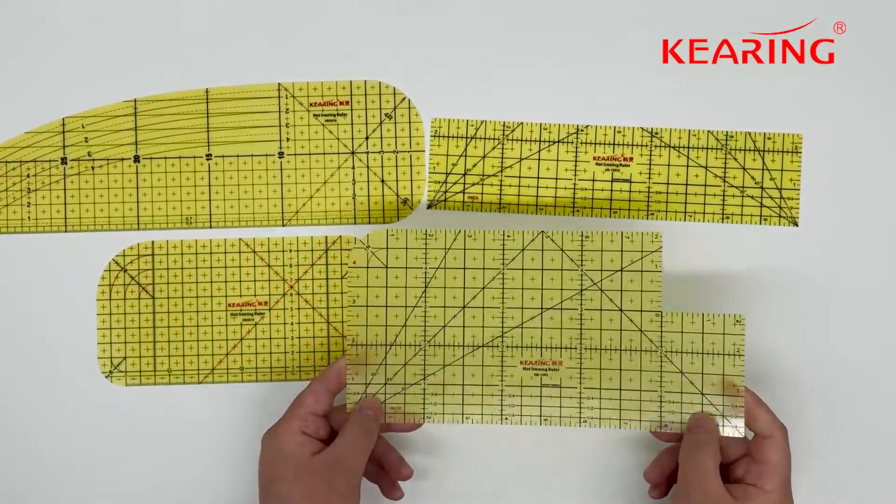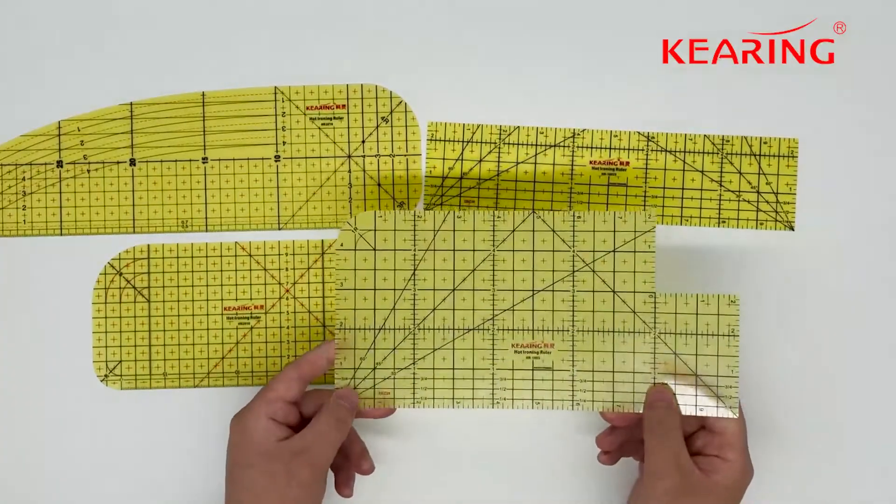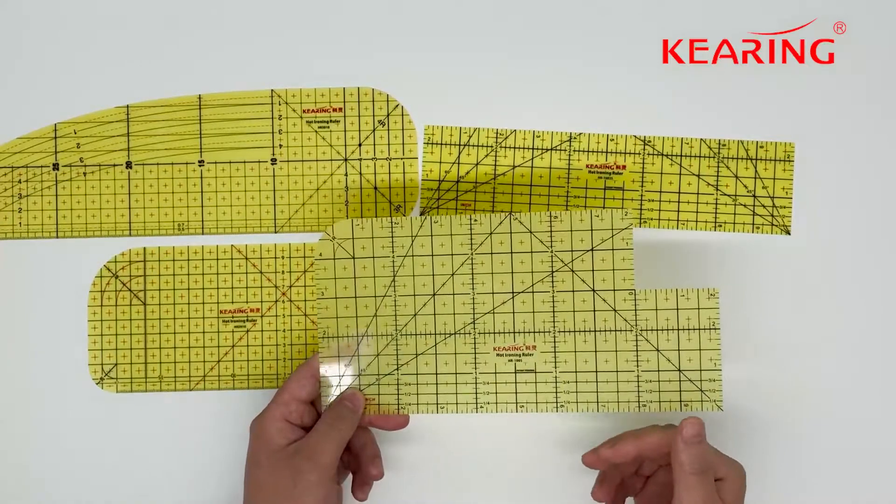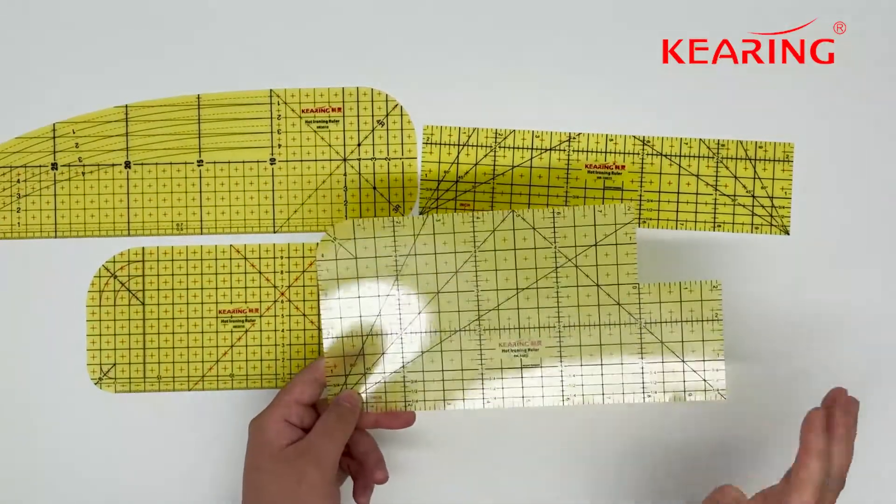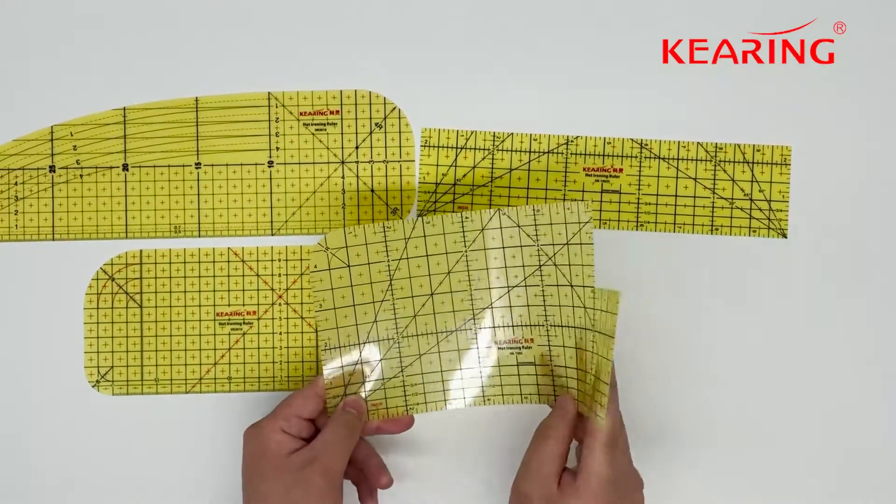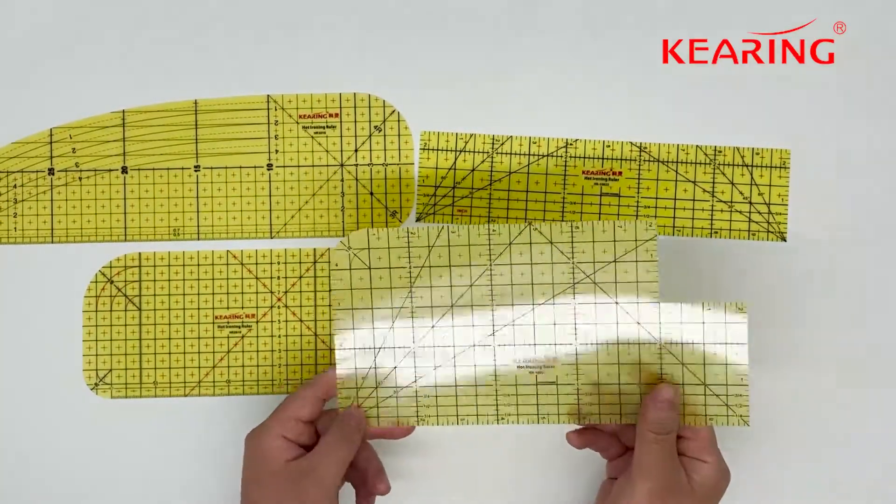During the past 12 months, we're making this ruler by using a special plastic. When we fold the fabric and do high temperature hot ironing, this type of ruler will never melt or warp.